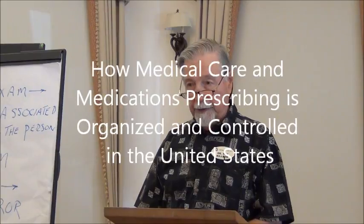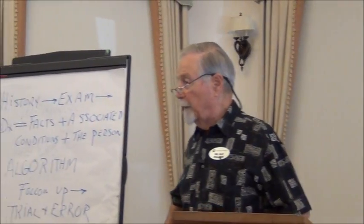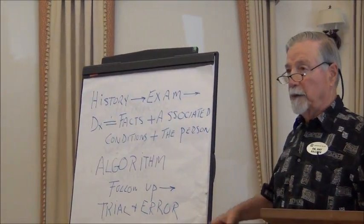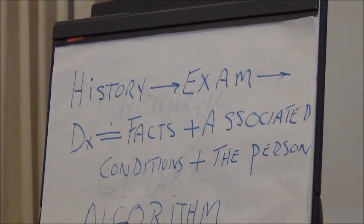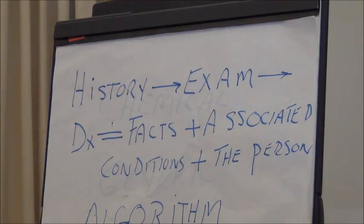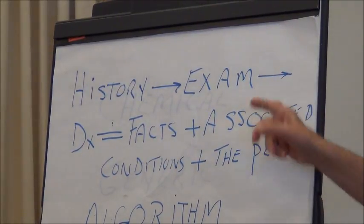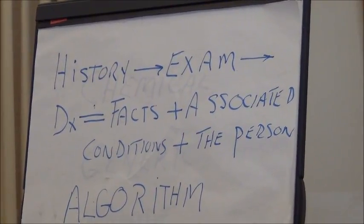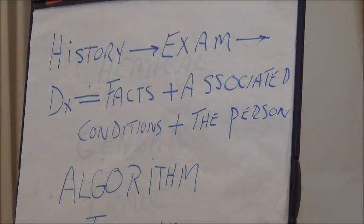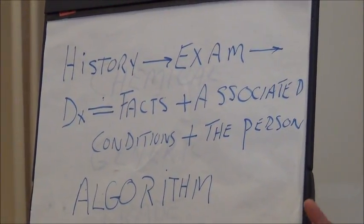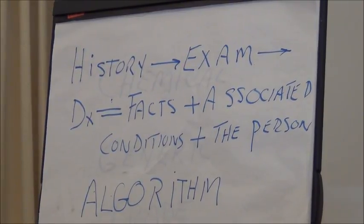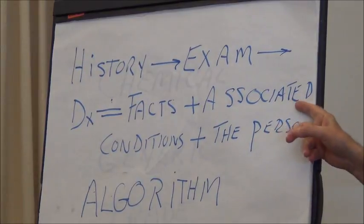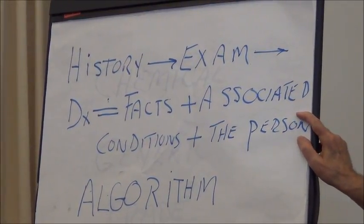I want to begin today by presuming that you are going to see a physician because you have a particular problem. What happens when you get there is the first thing they do is they take a history. Probably the most important thing about making a diagnosis is in the history. History is extremely important, followed by a physical examination in which you get a tentative diagnosis, and then you go to laboratory tests or imaging procedures which verify what your tentative diagnosis is. Taking all of those things together as facts and then factoring in whatever associated medical conditions you may have.